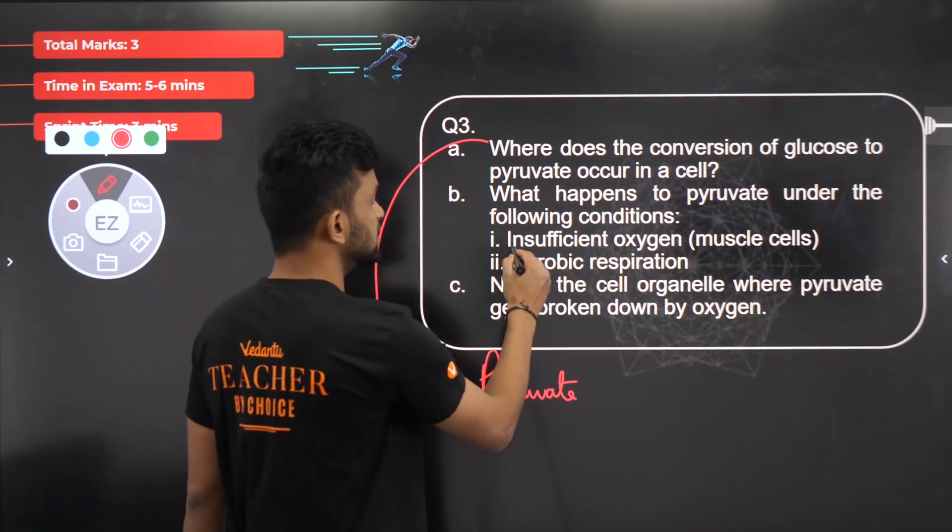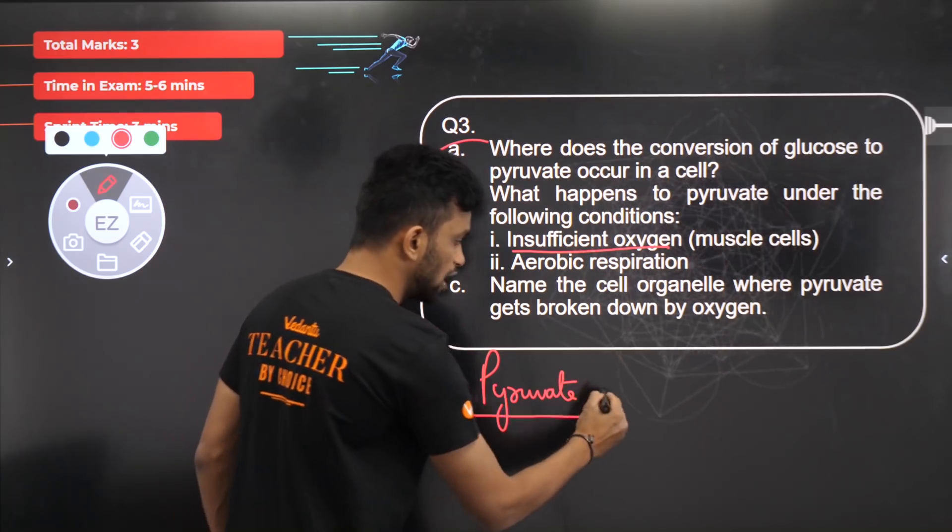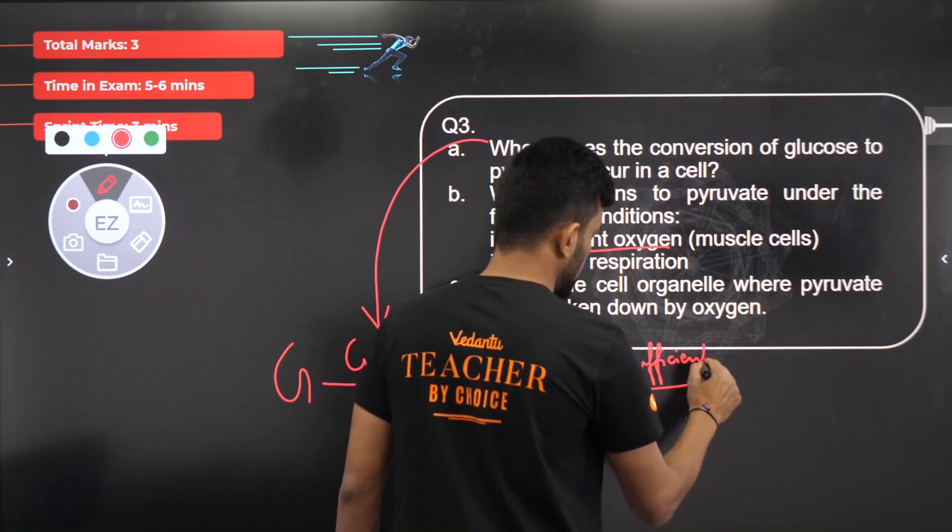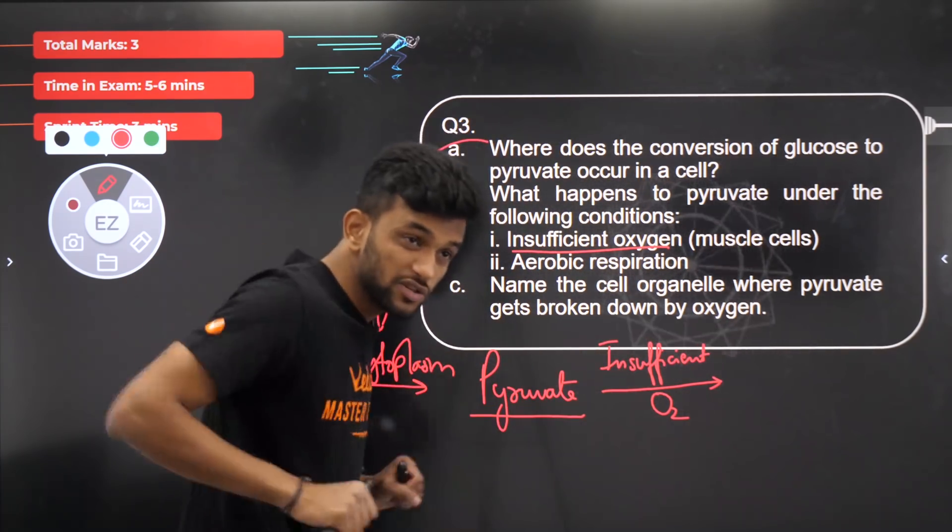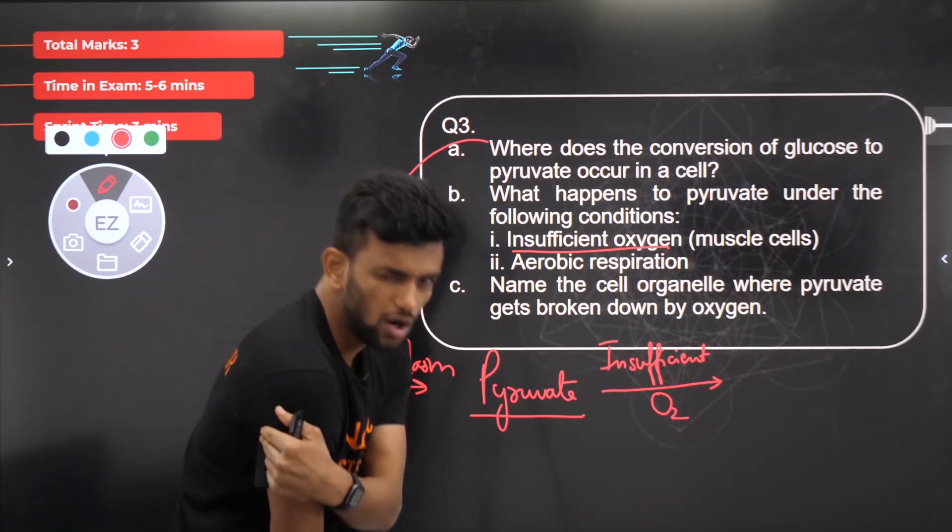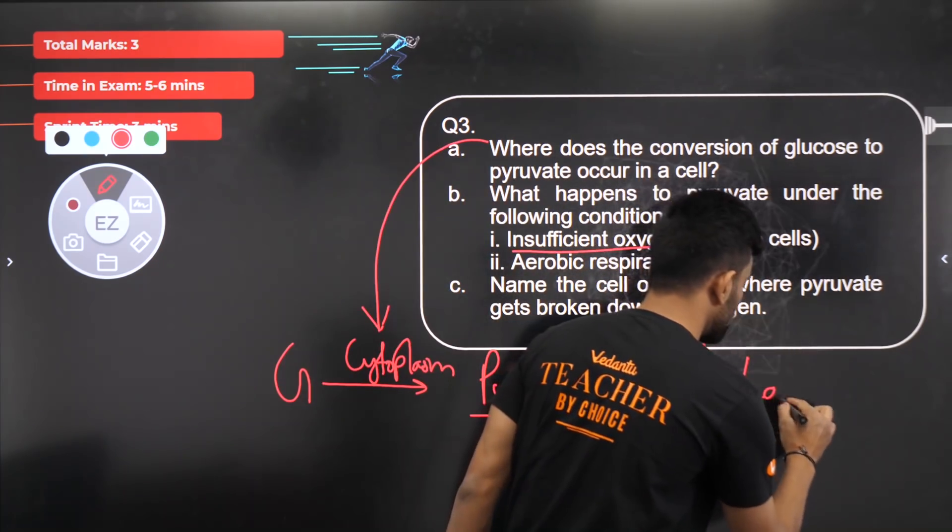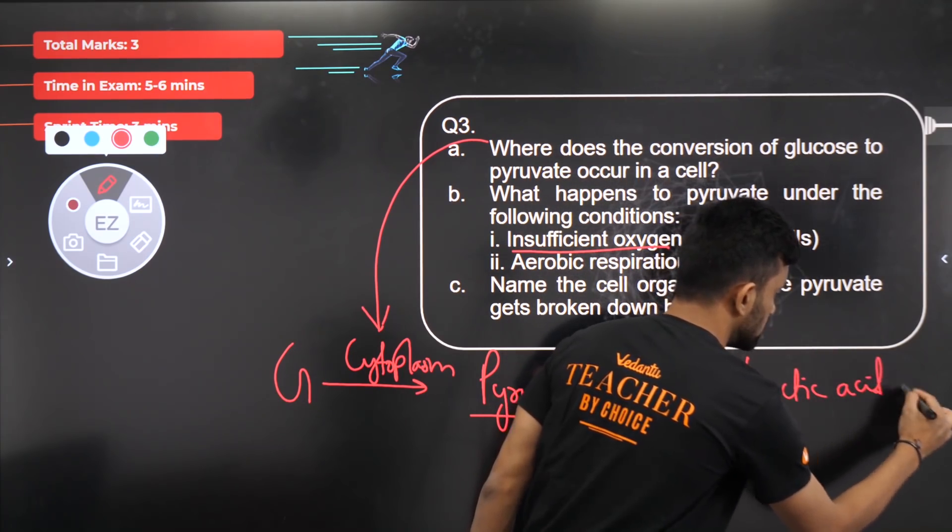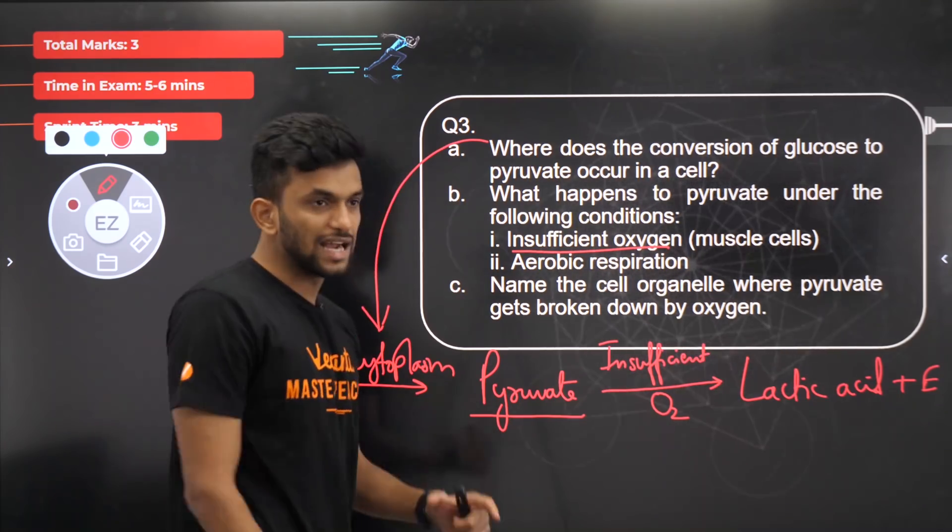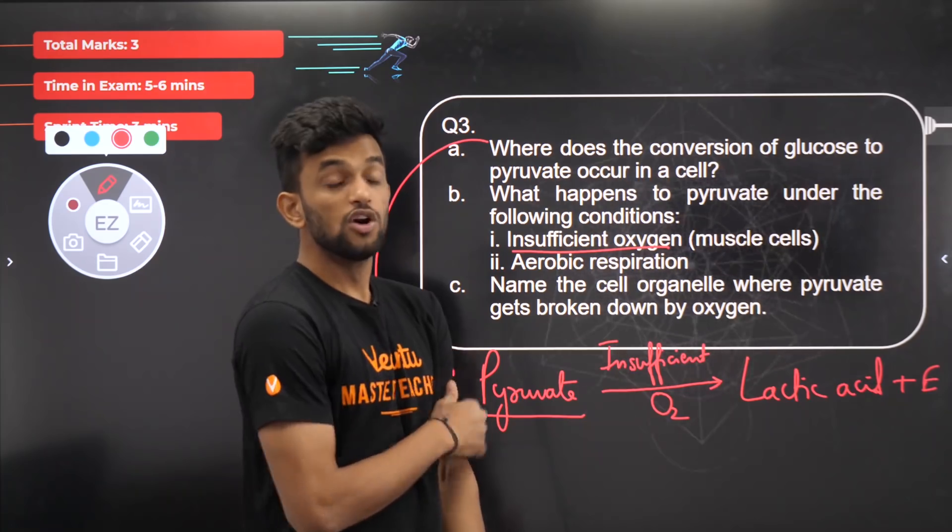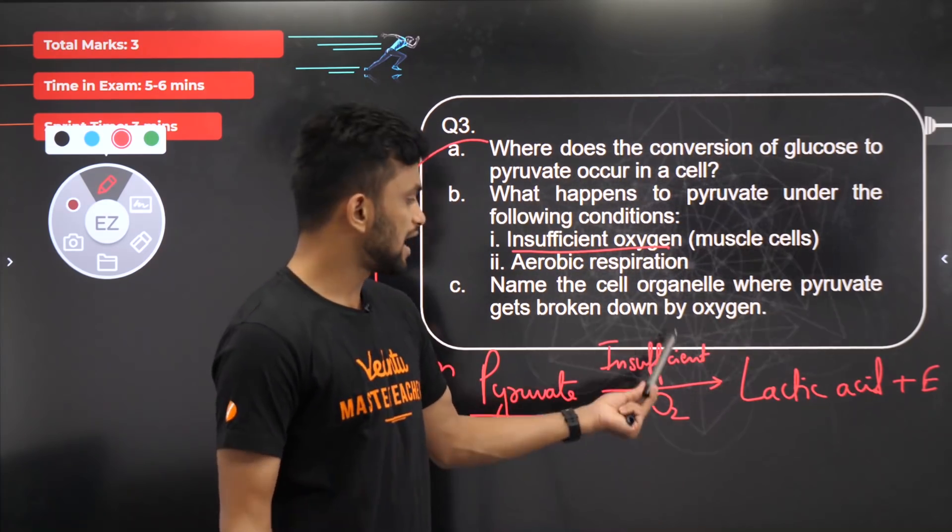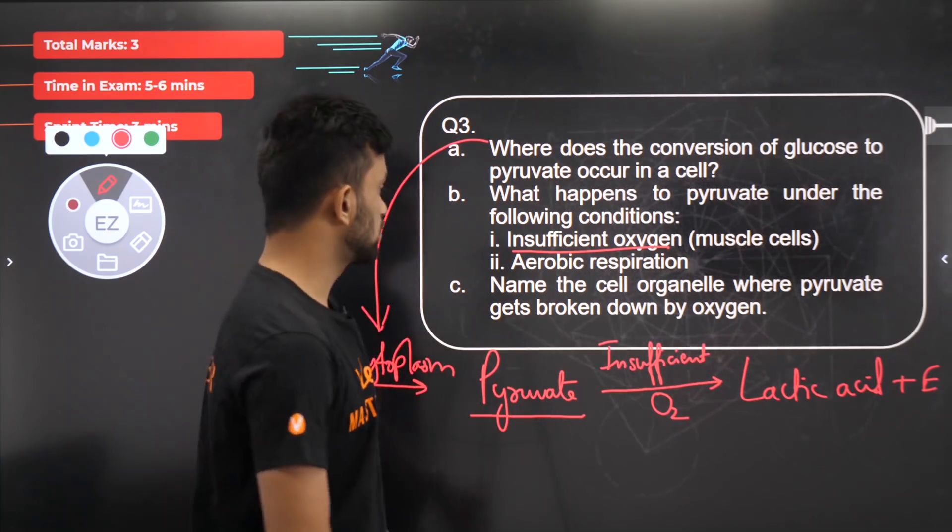What happens to pyruvate under the following conditions? In insufficient oxygen in muscles, when I'm exercising and building muscles, next day I feel pain. Why does that happen? Because of the formation of lactic acid. Lactic acid is produced when anaerobic respiration happens in the absence of oxygen in muscle cells. When I'm working out, it takes time for oxygen to reach from lungs to my muscles, so in that time my cells start doing anaerobic respiration, and hence lactic acid is produced.